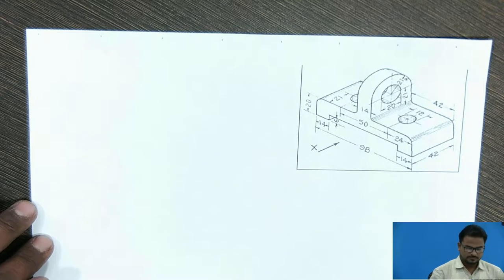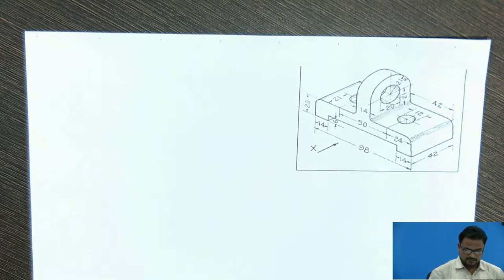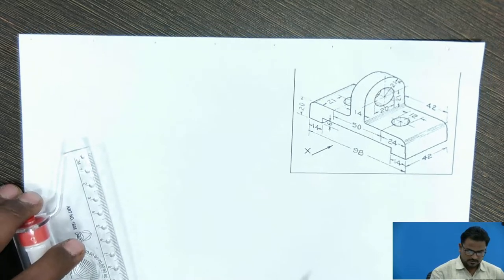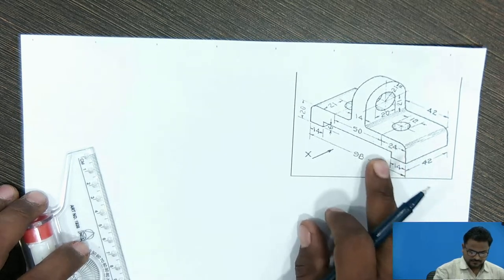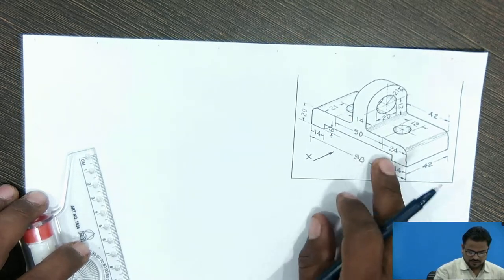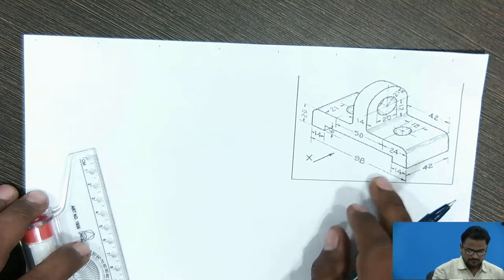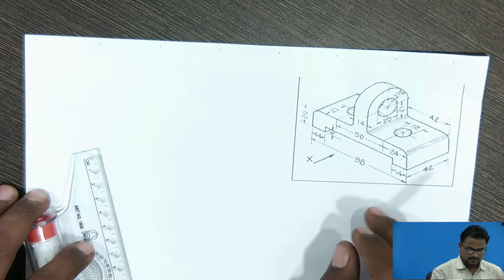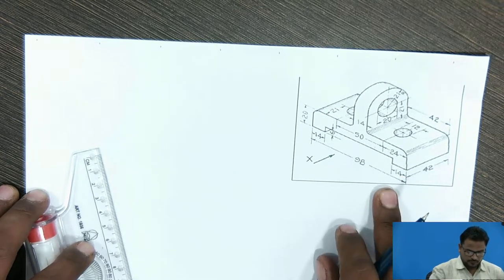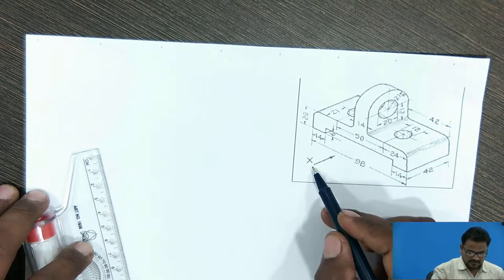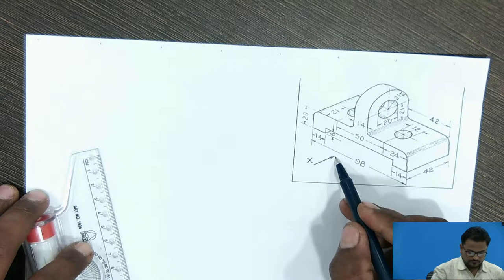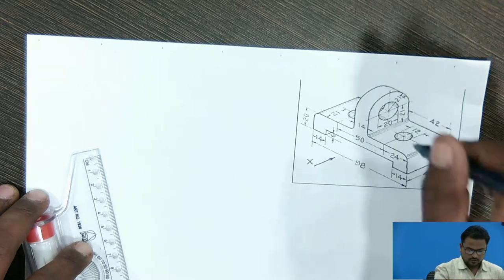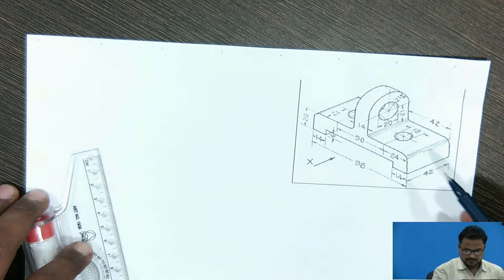So this is the simple object we have to select and draw. This is the 3D object and we are going to convert it from 3D into 2D. So this is the direction of view — this is the front view, top view, and the side view.